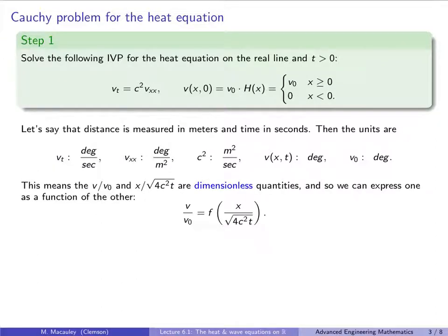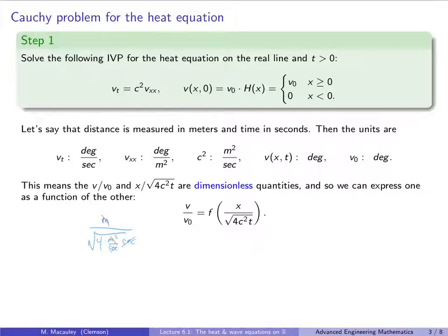Here's why we care. If we take V(x,t) and divide by V₀, the result is dimensionless. The other dimensionless quantity is x divided by √(4c²t). The factor of 4 is purely for notational convenience — it will make things cancel out nicely later. Most books write the heat equation as k·Vxx where k is positive; I've been using c² for consistency with the wave equation, so I keep the form √(4c²t) rather than writing 2ct.